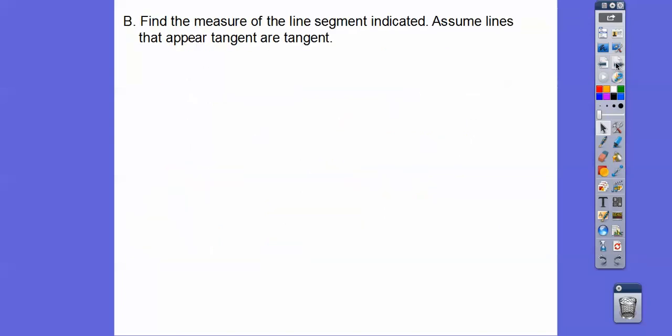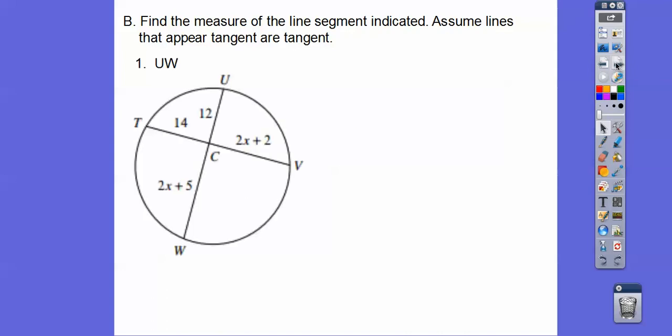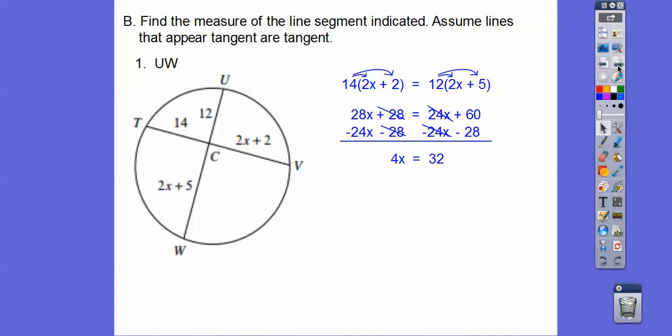Find the measure of the line segment indicated and assume lines that appear tangent are tangent. This is intersecting chords, so piece times piece equals piece times piece. Lefty times righty equals this one times this one right here. Let's distribute. Then we're going to subtract 24x and subtract 28. I like to have the x's over here, so if there's any x stuff on the right, I put it on the left. 28x minus 24x is 4x. And then that's going to give us 32, so x equals 8.